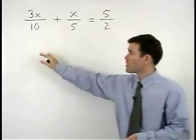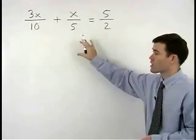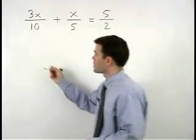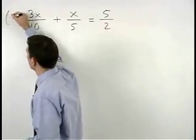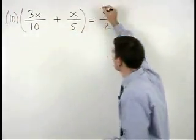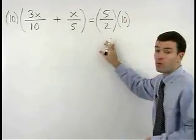In this problem our denominators are 10, 5, and 2. So the common denominator is 10 and we multiply both sides of the equation by 10 to get rid of the fractions.